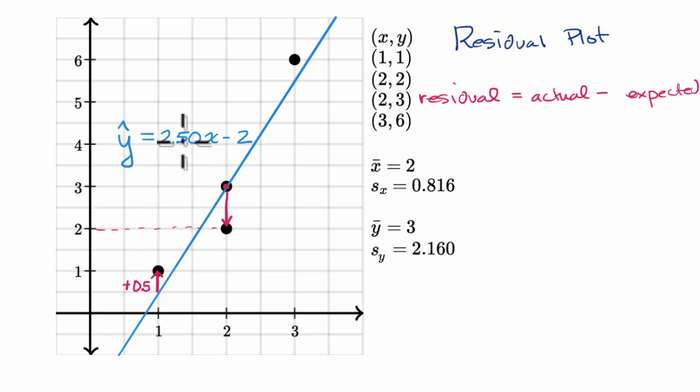The expected, two times 2.5 minus two is three, so this is going to be two minus three, which equals a residual of negative one.